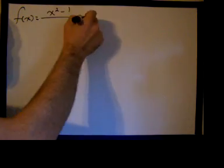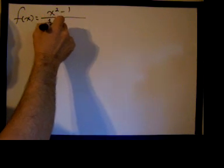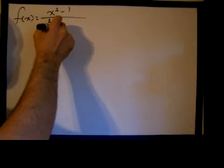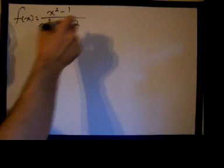Good morning. We're going to take the derivative of f of x equals x squared minus 1 divided by x squared plus x minus 2.